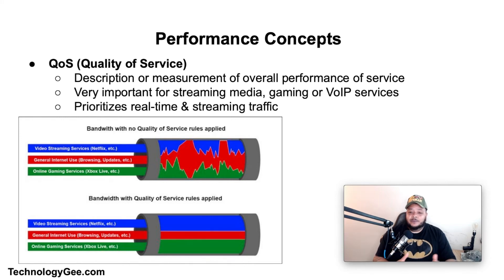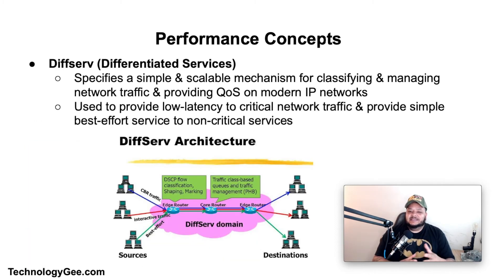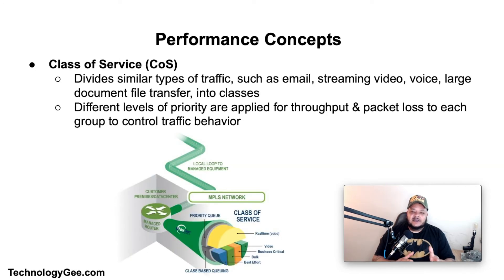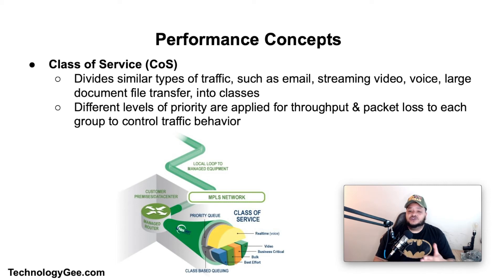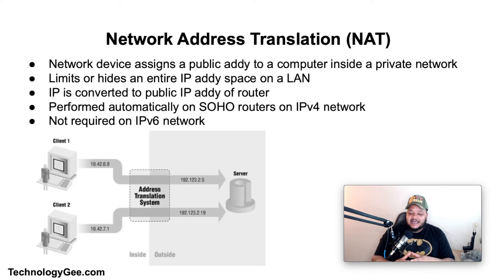Differentiated Services (DiffServ) is a computer networking architecture that specifies a simple and scalable mechanism for classifying and managing network traffic and providing QoS on modern IP networks. DiffServ can provide low latency to critical traffic such as voice or streaming media while providing best-effort service to non-critical services like web traffic or file transfers. Class of Service (CoS) addresses network congestion by dividing similar types of traffic — such as email, streaming video, voice, and large file transfers — into classes, then applying different priority levels for throughput and packet loss to each group to control traffic behavior.